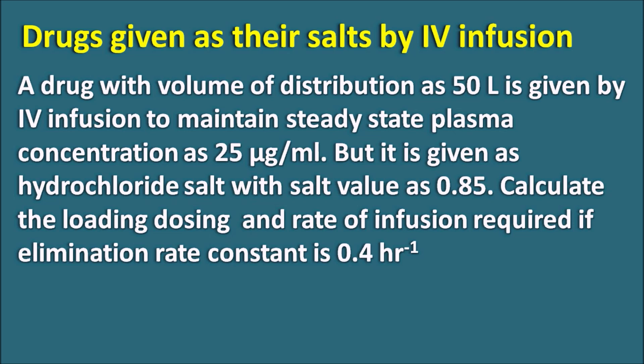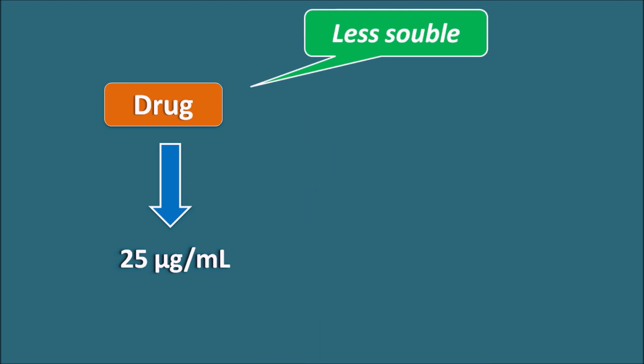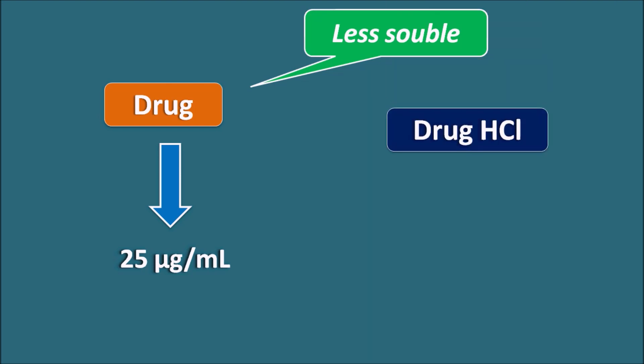Let us take a practical example. A drug with a volume of distribution of 50 liters is given by IV infusion to maintain a steady-state plasma concentration of 25 micrograms per mL. It is given as a hydrochloride salt with a salt value of 0.85. Calculate the loading dose and the rate of infusion required if the elimination rate constant is 0.4 hr⁻¹.